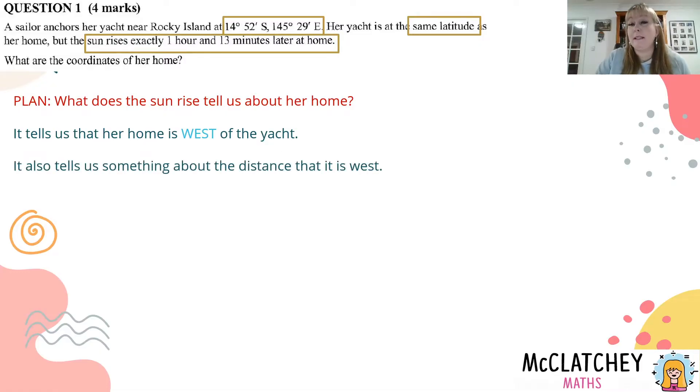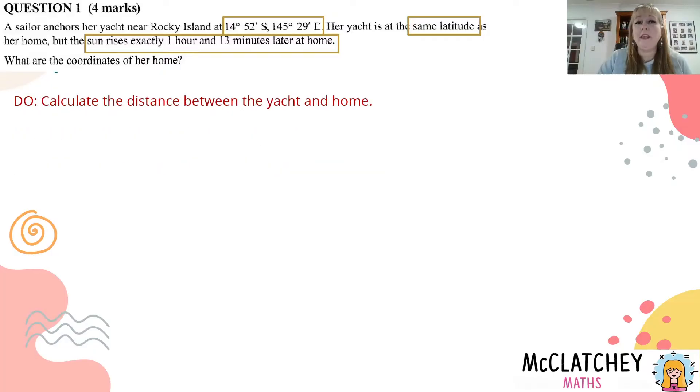It also tells us a little bit about the distance - how far west that particular home is from the yacht. So let's work out that distance in terms of degrees, not kilometers. We're going to work out the angular distance between the yacht and the home. Firstly let's remember that there are 360 degrees in the turn of the earth and there's 24 hours in one day.